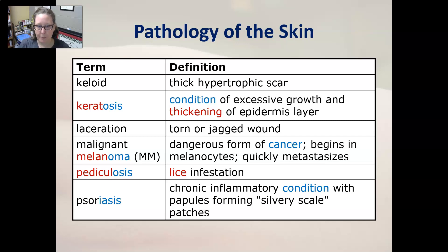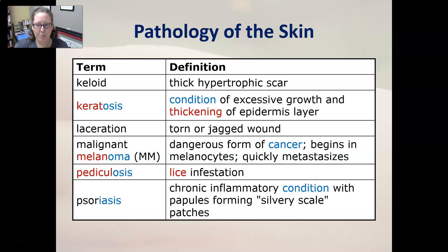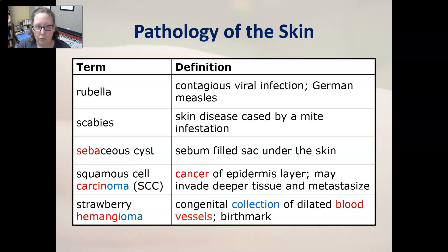Pediculosis is a lice infestation. Psoriasis is a chronic inflammatory condition with papules—raised areas that form silvery scale patches—representing excessive skin growth that becomes dry. It is an autoimmune condition. Rubella is a contagious viral infection also referred to as the German measles. Scabies is a skin disease caused by a mite infestation.